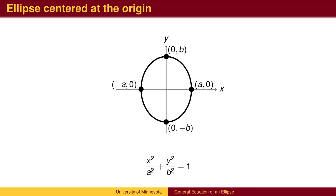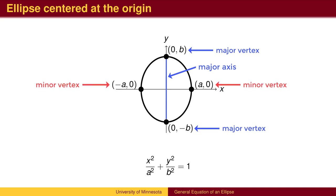The points on the ellipse that are farthest apart are called the major vertices, and the line segment connecting them is called the major axis. The points on the ellipse that are closest together are called the minor vertices, and the line segment connecting them is called the minor axis. The intersection of the major axis and minor axis is called the center.